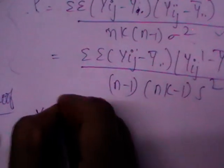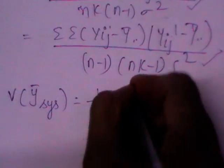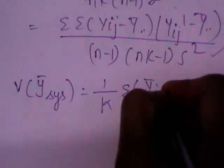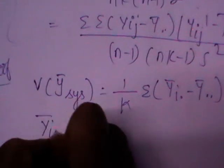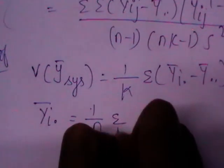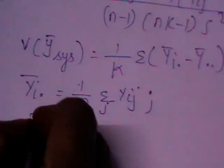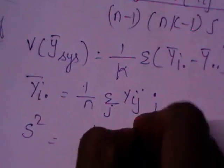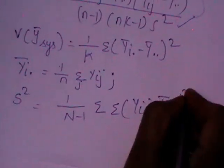The formula for variance of ȳ_sys is (1/k) · Σ (ȳ_i· - ȳ..)², where ȳ_i· = (1/n) · Σ_j y_ij. The formula for s² is: s² = 1/(n-1) · double summation of (y_ij - ȳ..)².